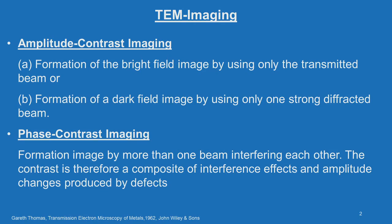Looking at the major classification of imaging: the first category is amplitude contrast imaging, which involves the formation of a bright field image by using only the transmitted beam. The other category is phase contrast imaging, where the image is formed by more than one beam interfering with each other. We will first go through amplitude contrast imaging, which we can also call diffraction contrast.